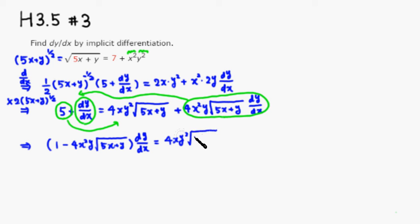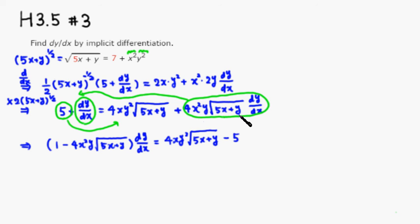On the right-hand side we have 4xy²√(5x+y), and the 5 moves to the right as minus 5. So the right side is 4xy²√(5x+y) minus 5.